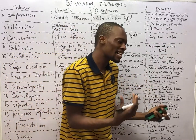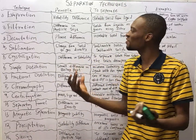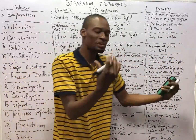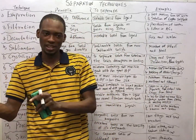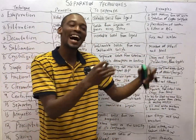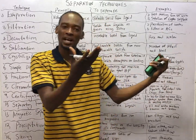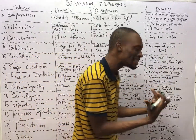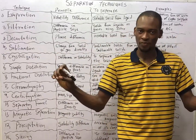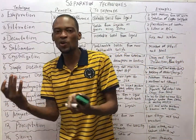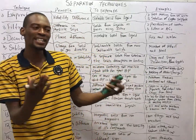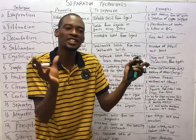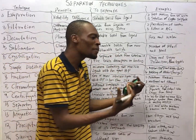I also explained that matter can be divided into pure and impure substances. Pure substances are elements and compounds, while impure substances are referred to as mixtures. Once you mix anything physically, you form a mixture.